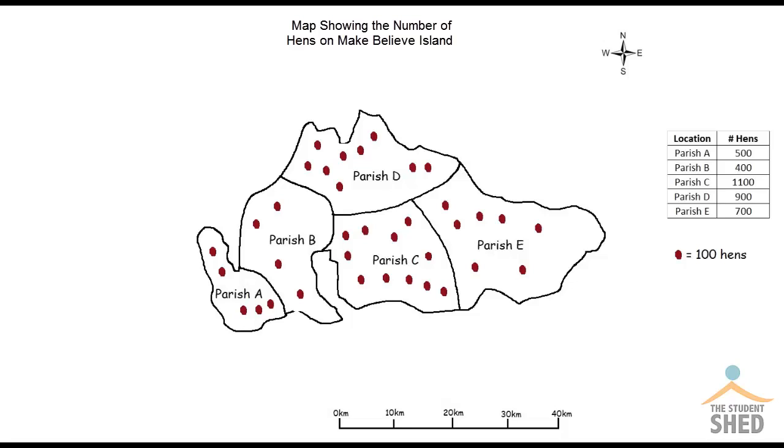So now we have all of the details of our map filled out. That's how we would create a simple dot distribution map.